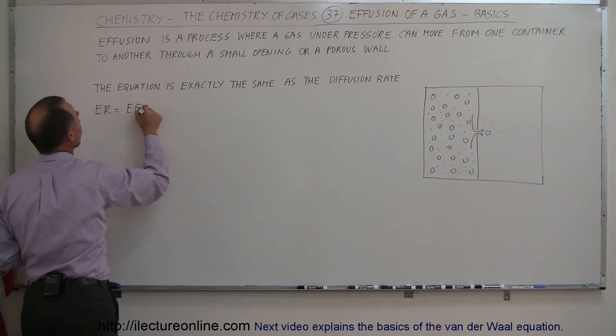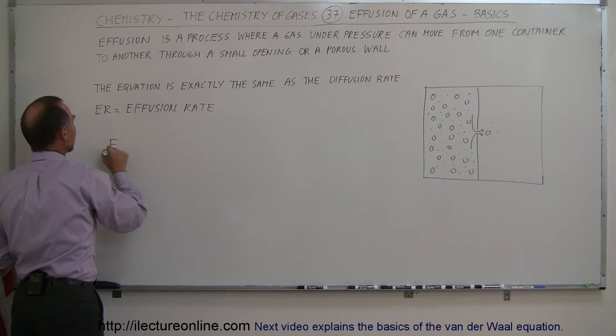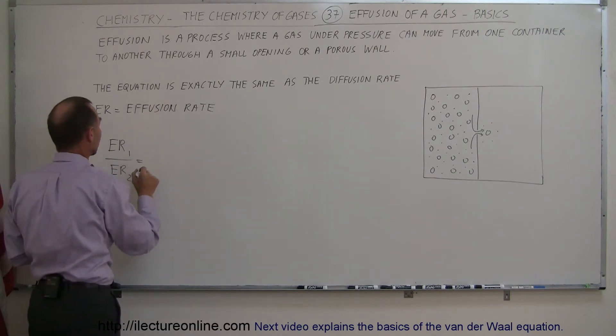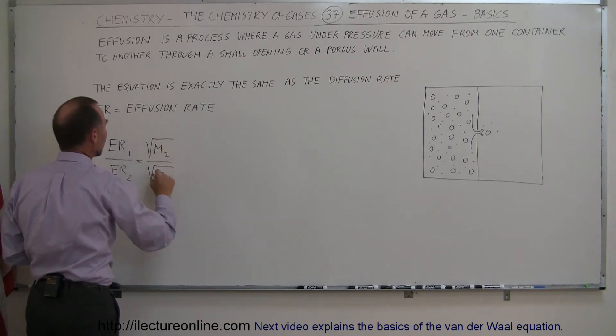Therefore the effusion rate of one type of molecule divided by the effusion rate of another type of molecule, so this is simply the relation between one and the other, or the fraction of one to another, is equal to the square root of the mass of the second one divided by the square root of the mass of the first one.